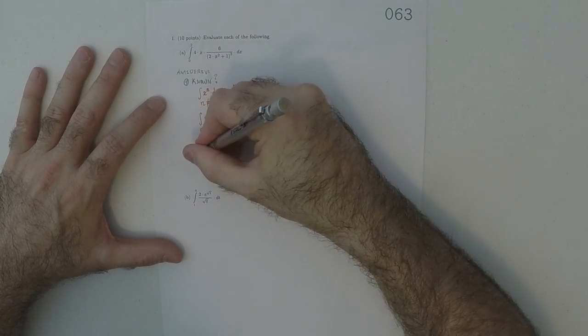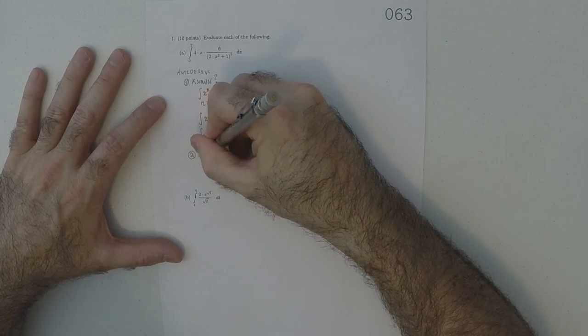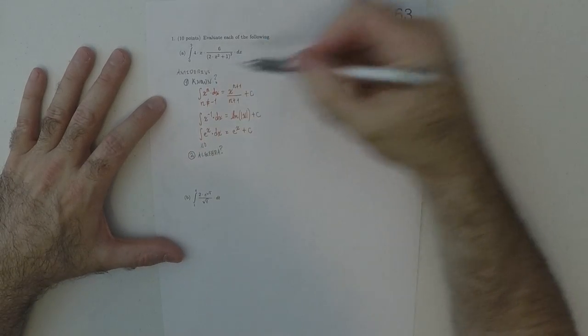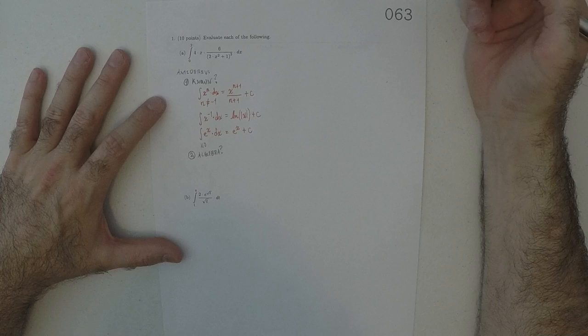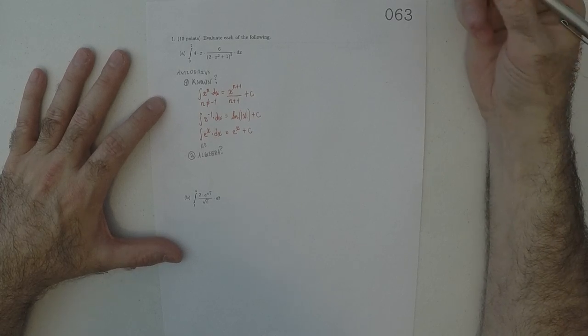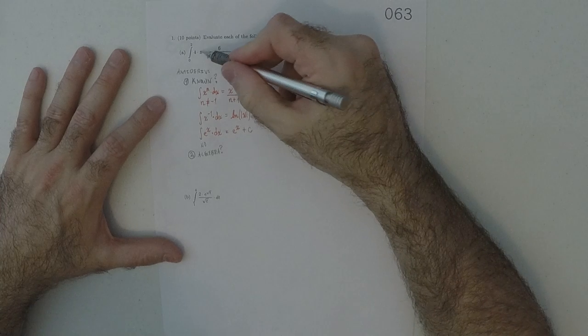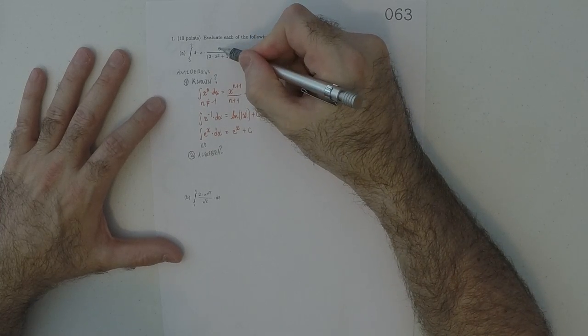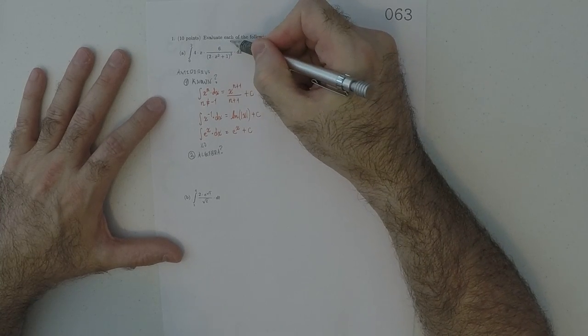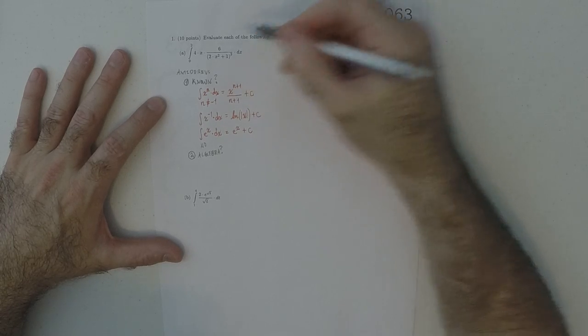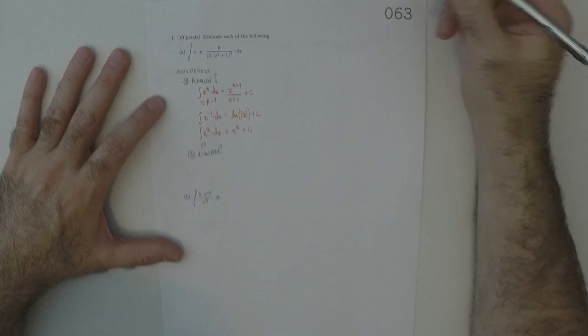The next question that we ask ourselves is, can we do something algebraic to make it work? And the answer is, in the end, no. I mean, we could combine the 4x and the 6 in the numerator, but this thing in the denominator, we can't accomplish anything algebraic with it.